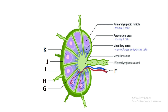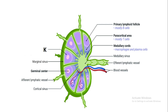D is the medullary sinus. E is the efferent lymphatic vessels, taking the lymph away from the lymph node. F is some blood vessels. G is the cortical sinus. H is the afferent lymphatic vessel. I is the germinal center, which is a very important component of the lymph node. J is the marginal sinus, and K is the secondary lymphoid follicle, which is normally within the germinal center.